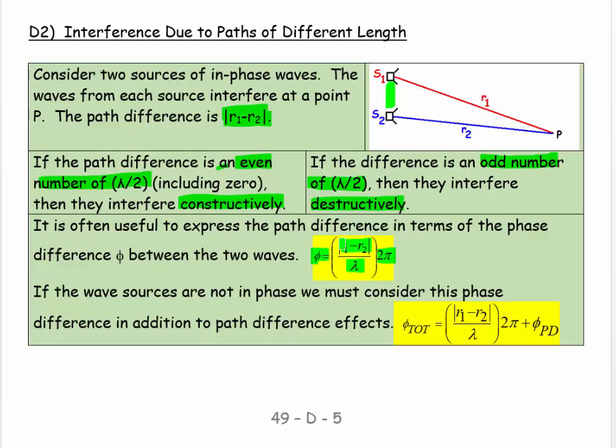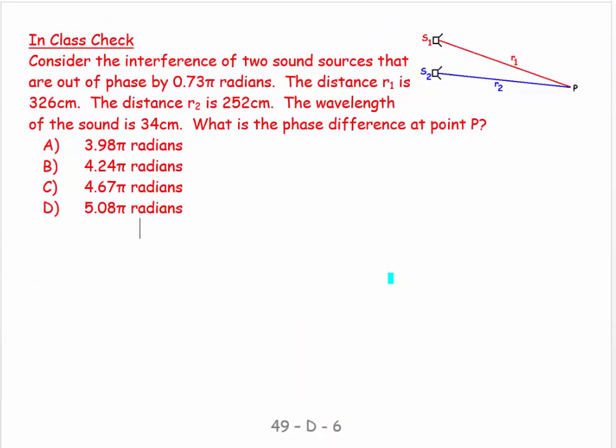It's the difference in the two lengths divided by the wavelength multiplied by 2π. This sets us up so we can say if the wave sources are not in phase, we must consider the phase difference in addition to the path difference effect. So we get |r₁ - r₂| divided by λ multiplied by 2π, which gives the path difference expressed in terms of radians, and then we add to that the phase difference effect. Let's try an example and it'll fall into place.